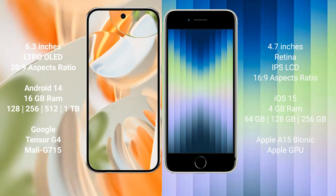The Google Pixel 9 Pro runs on the Android 14 operating system, while the iPhone XC runs on iOS 15.